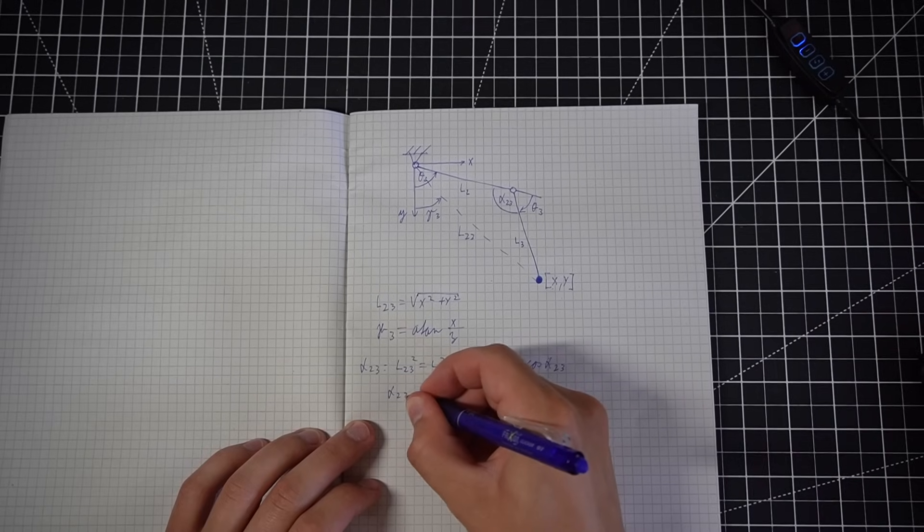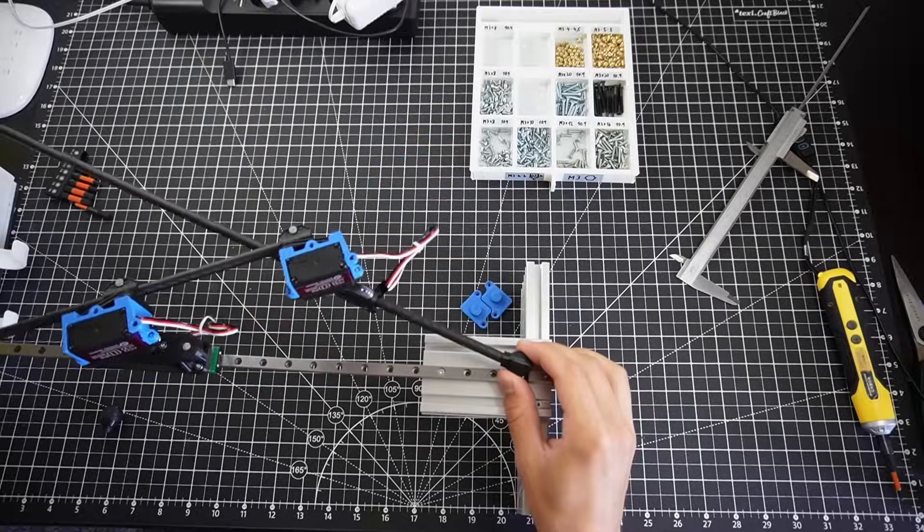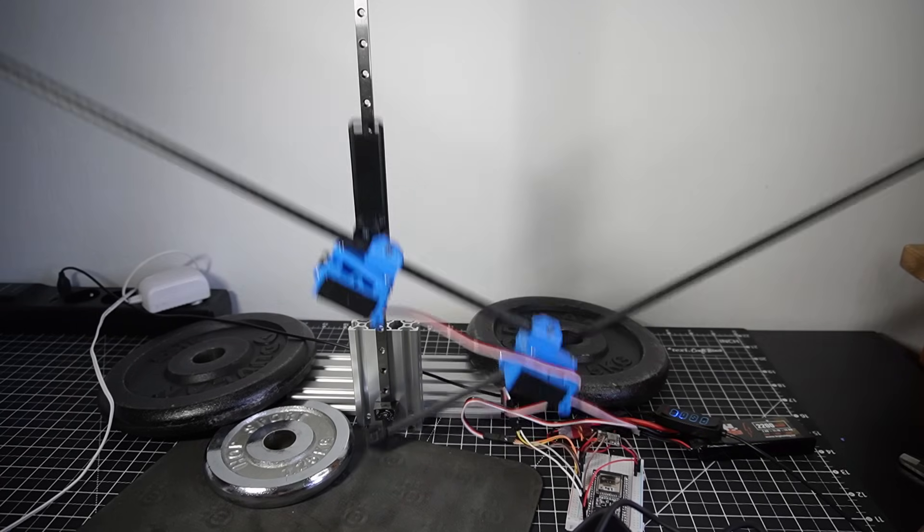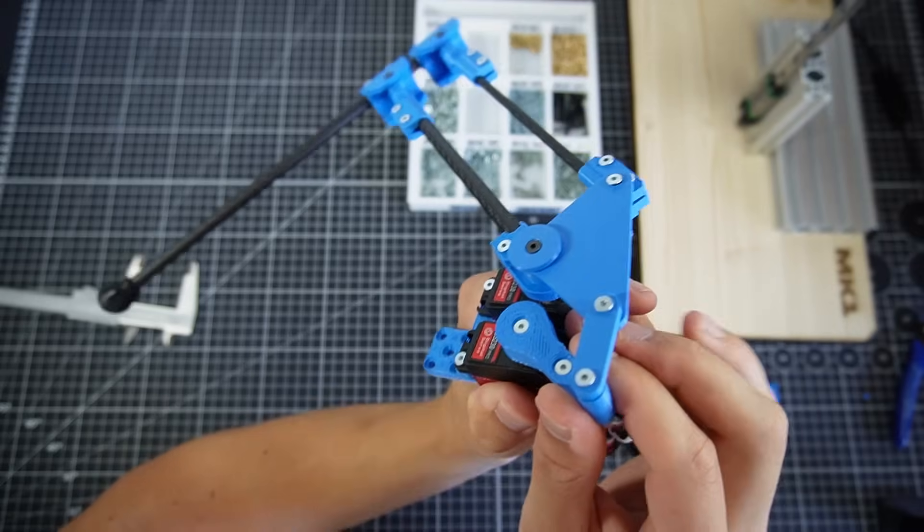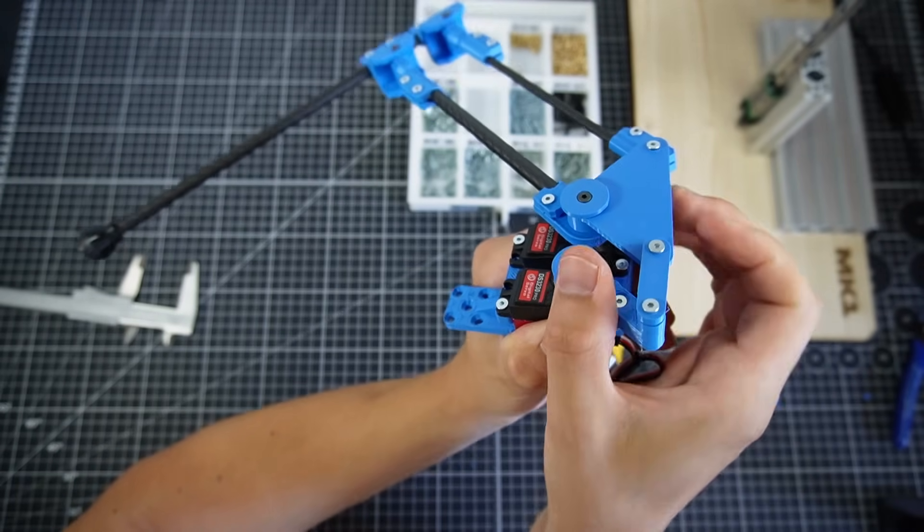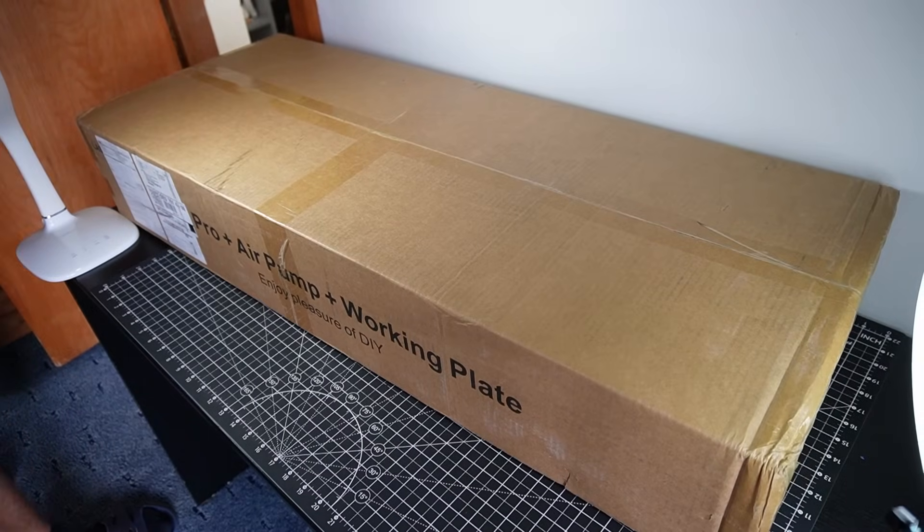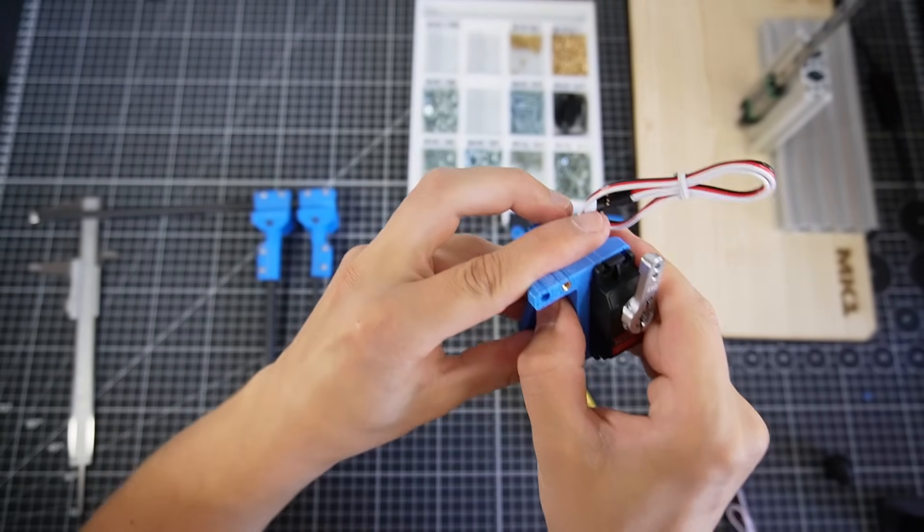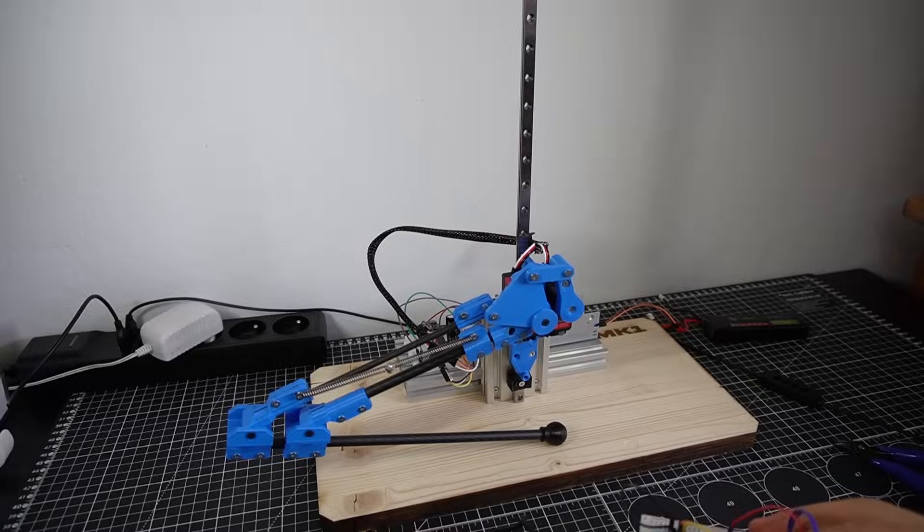Last video I made a shitty prototype of the robot's leg. It was really bad, shaking like crazy and wasn't even able to jump. This time there's gonna be a lot happening. I'm gonna be getting my first CNC, I'm gonna scrap the old design and make a new leg with a different mechanism.